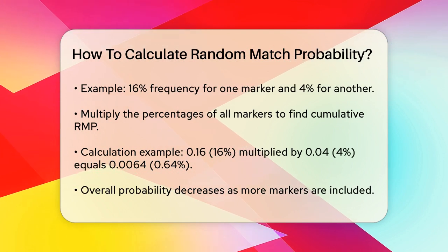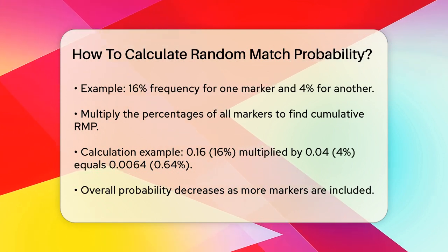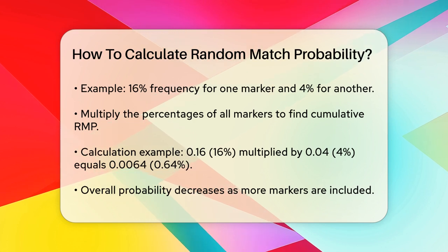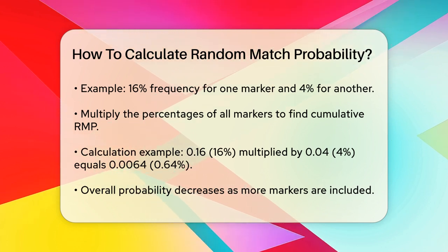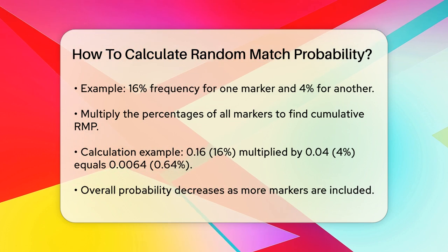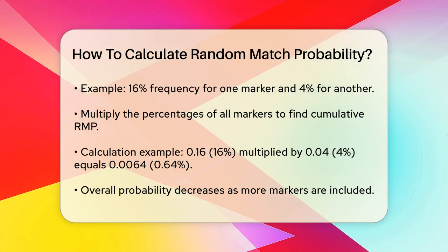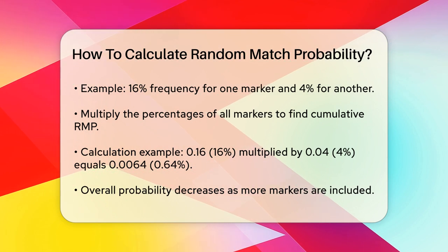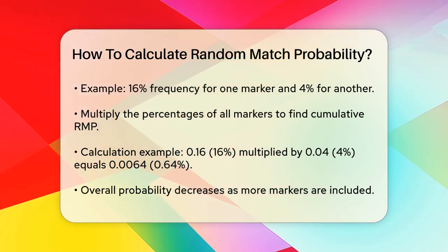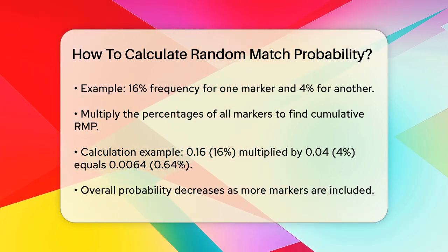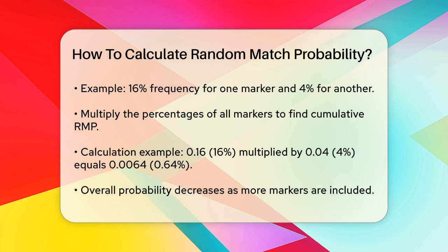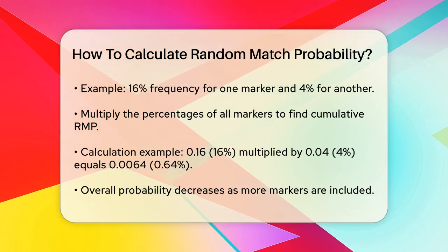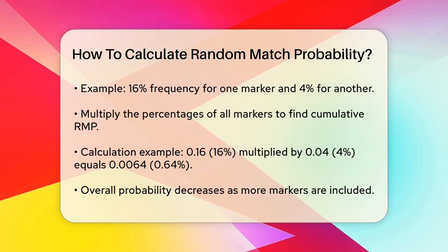So if you have a marker with a 16% frequency and another with a 4% frequency, you multiply 0.16 by 0.04, which gives you 0.0064, or 0.64%. As you continue this process for all the markers in the DNA profile, the overall probability gets smaller and smaller. For example, if you multiply several of these frequencies together, you might end up with a very small number, like one in 7,000 or even one in a million.